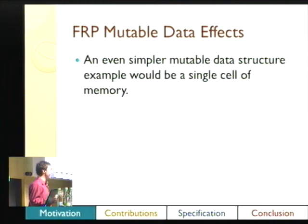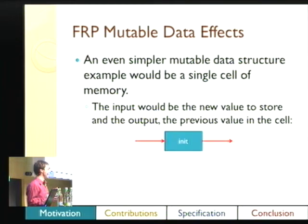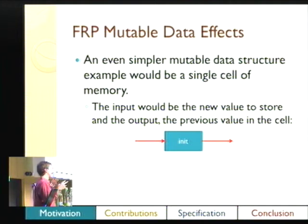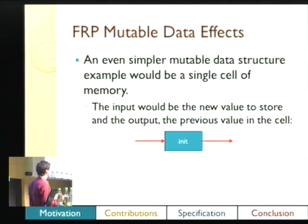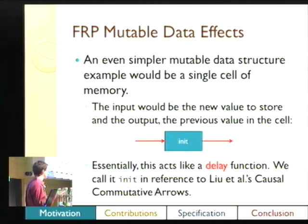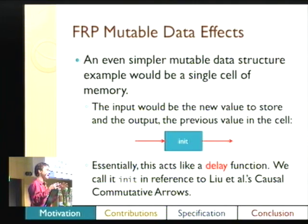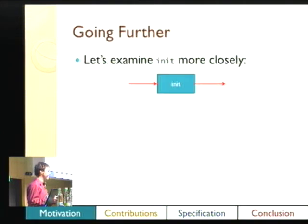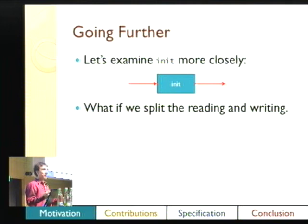We can look at an even simpler example: what if it's just one cell of memory? You have an input stream that says what's going to be in this cell next time, and an output stream of what was just there. Anyone who's done FRP might recognize this is a delay — we call it `init` because of Lewadol's causal community of errors. But this is still doing two things — what if we could split it apart even more?